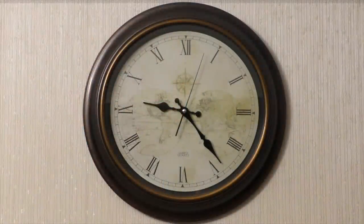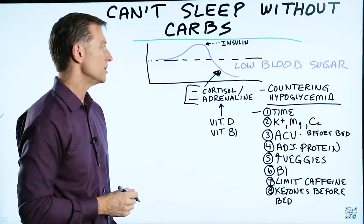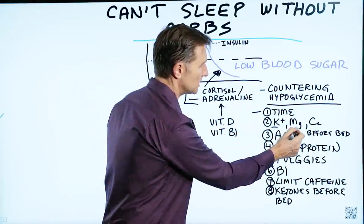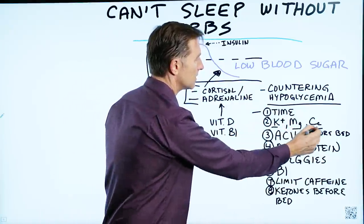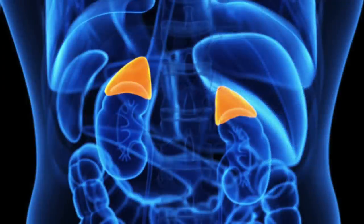Well, realize that with time, this problem is going to get better if you stick with it. But you can do things to improve it. You could take electrolytes like potassium, magnesium, and calcium. These are very calming for the adrenal gland, cortisol, and adrenaline.